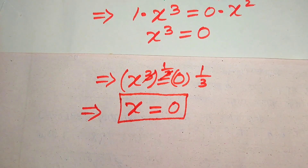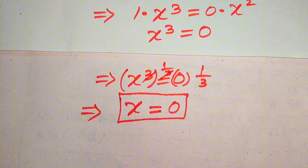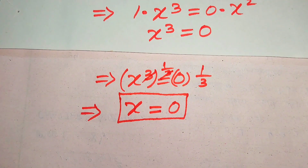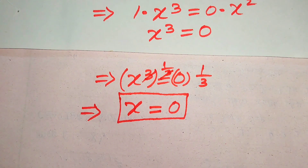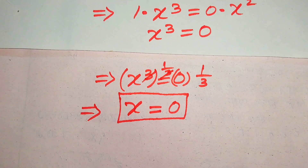So we get x equals 0, which is the same root as in the first method. In the first method we already verified this root, so this is our final answer. Thank you so much for watching this video. Please subscribe to my channel for more exciting videos.